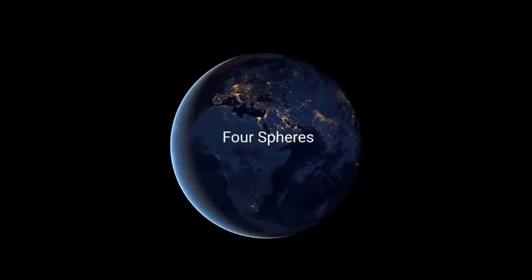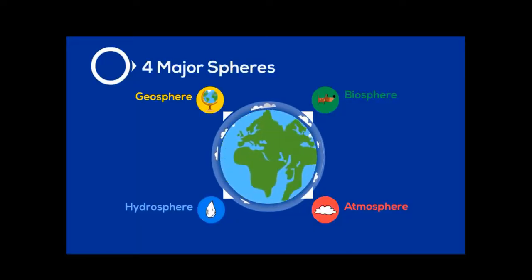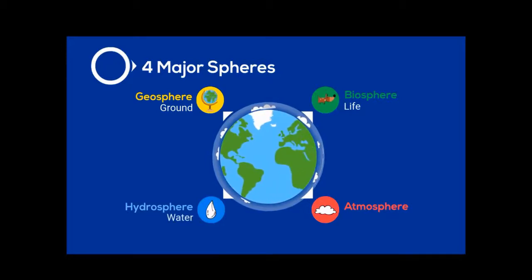We will discuss the four spheres of the Earth. The Earth can be divided into four major spheres or realms. Name of each sphere comes from the Greek word that describes what they are. Made of Geo for crust, Bio for life-form, Hydro for water and Atmo for air.